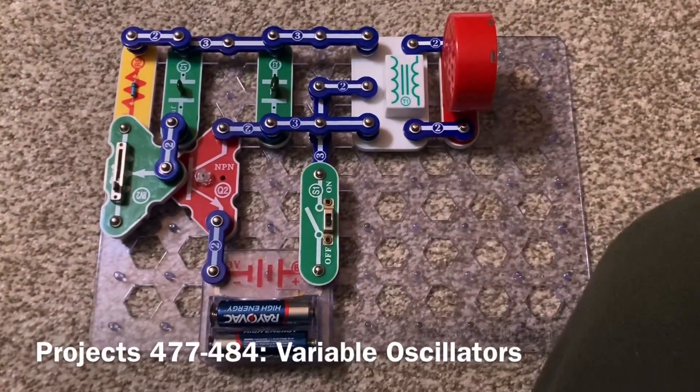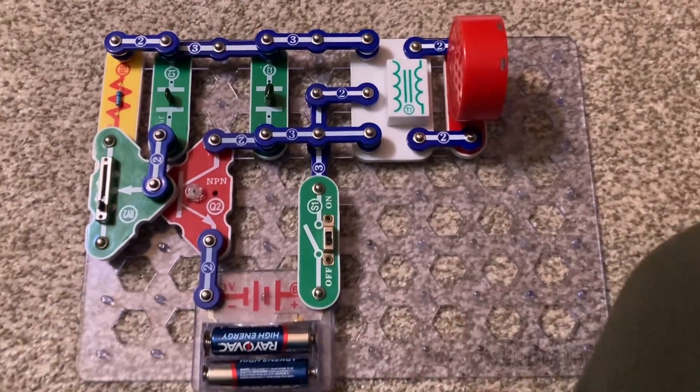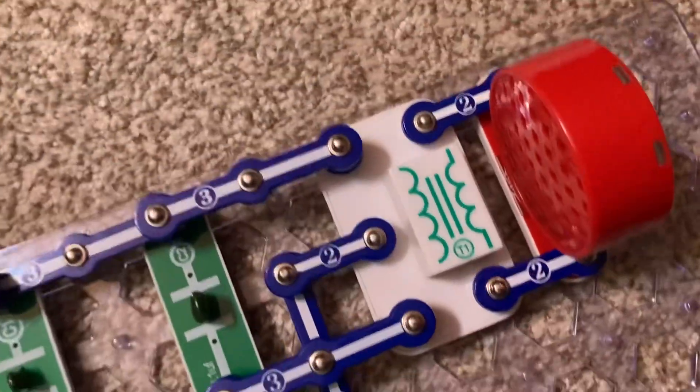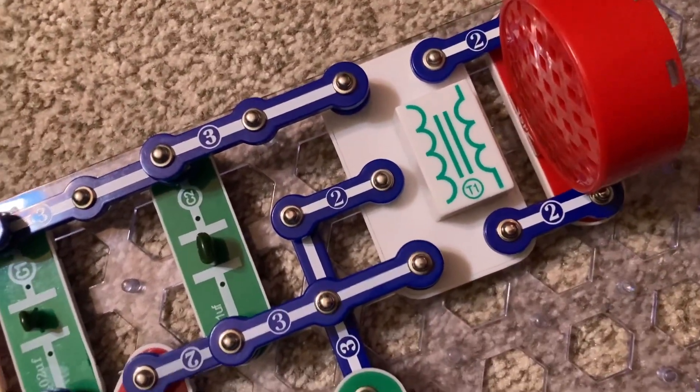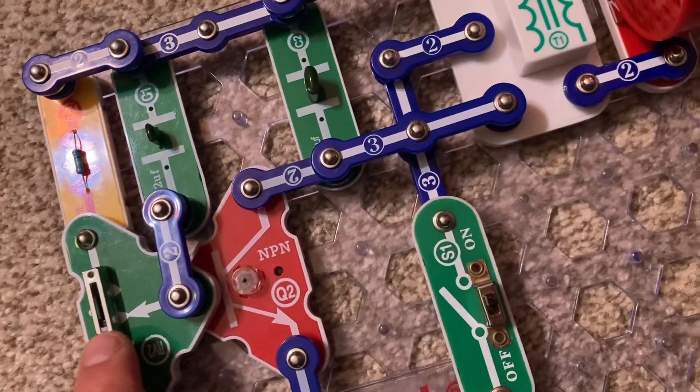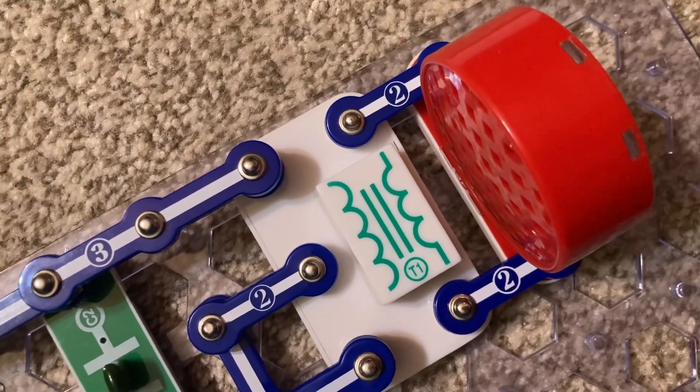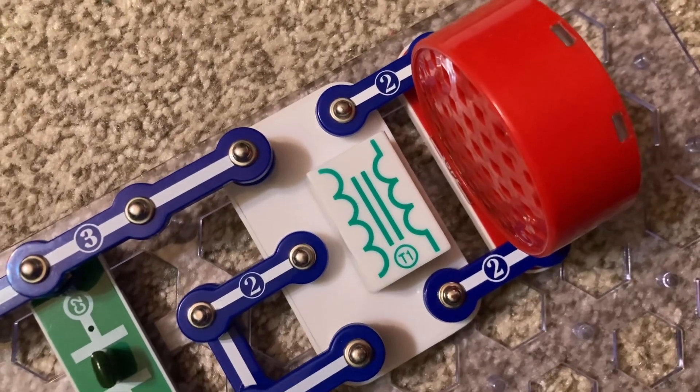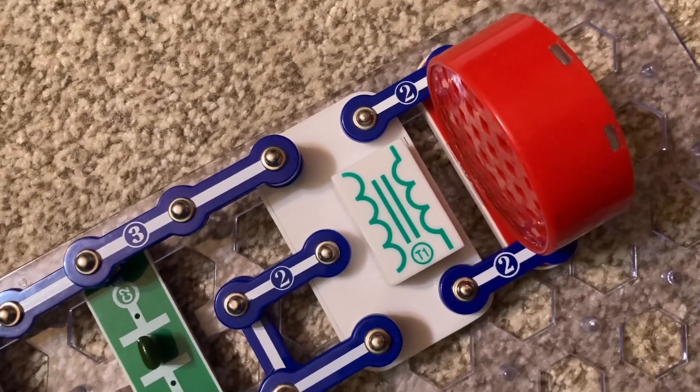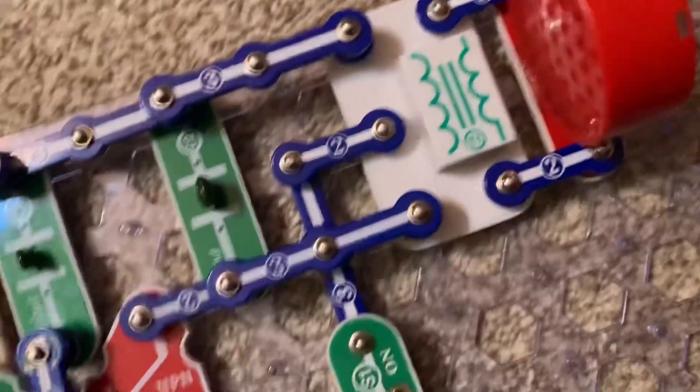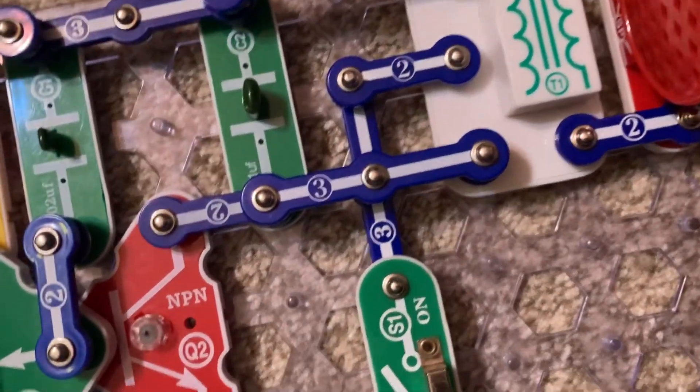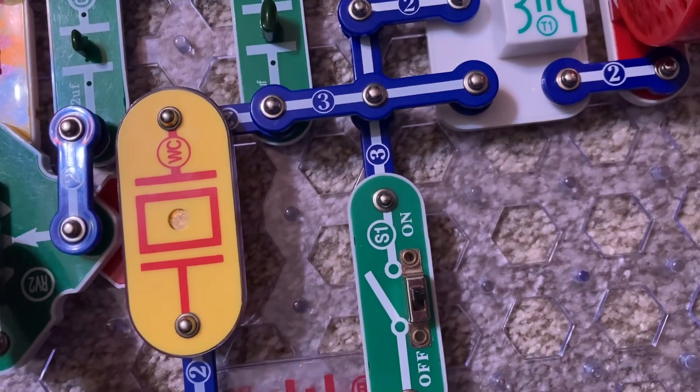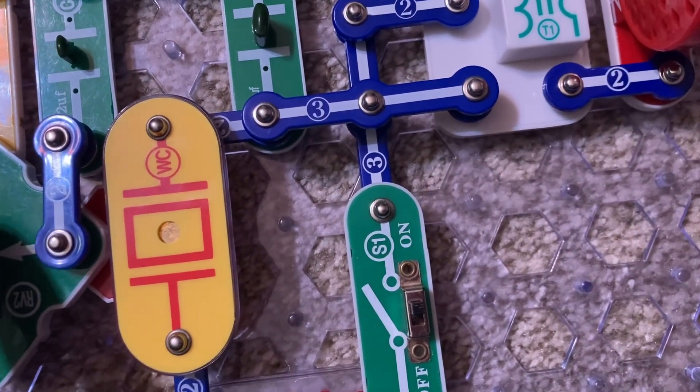The following eight projects are variable oscillator circuits. When I turn on the slide switch, you'll hear a sound coming from the speaker. Moving the lever on the adjustable resistor will increase or decrease the pitch. Now I'm going to place the whistle chip over the Q2 transistor and the pitch is higher overall.